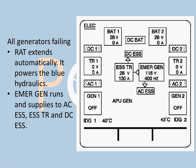What happens if everything fails — both generators gone, APU gone, and of course no ground power in the air? The RAT (ram air turbine) extends automatically. It powers the blue hydraulics, which run the emergency generator. The emergency generator supplies the essential TR and also the AC essential bus directly, since the generator produces AC. The essential TR converts AC to DC to supply the DC essential bus. This keeps the primary instruments and essential components running on both DC essential and AC essential.